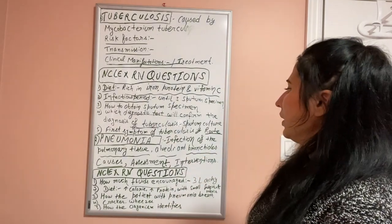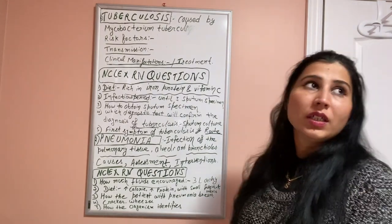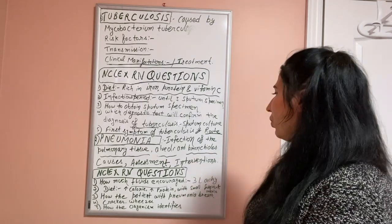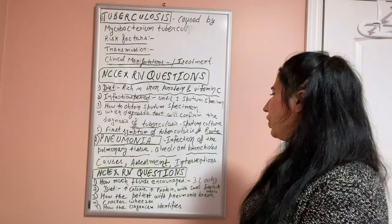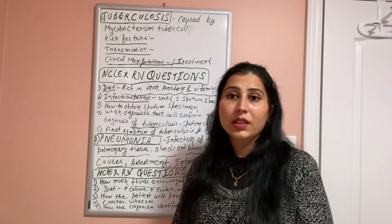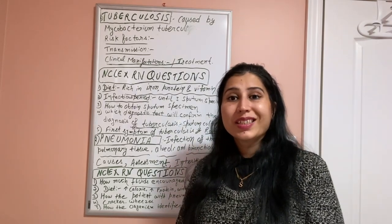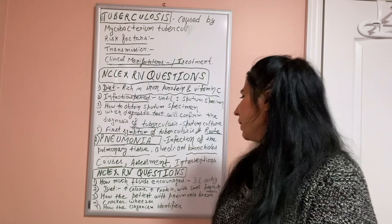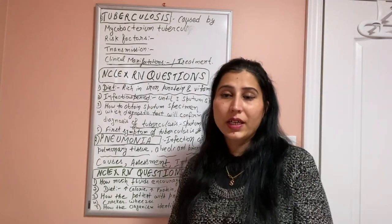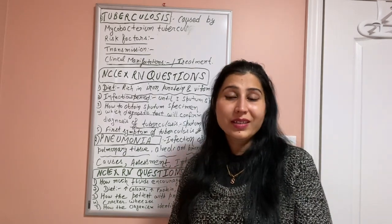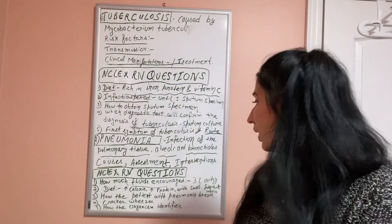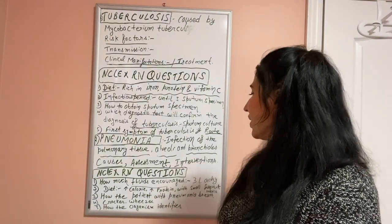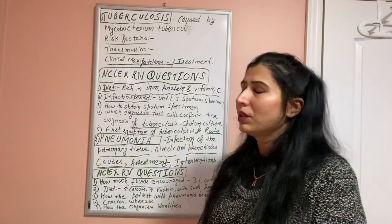Next is pneumonia. Pneumonia is an infection of the pulmonary tissue — mainly it's an infection of the lungs, spreading to the alveoli, bronchioles, and other parts of the lungs. Pneumonia is mainly caused by bacteria and viruses. It is also a very important topic.